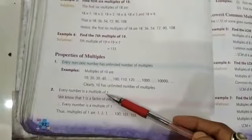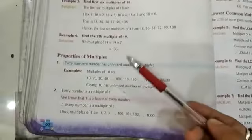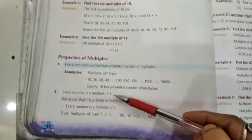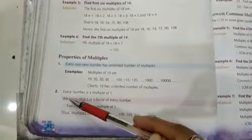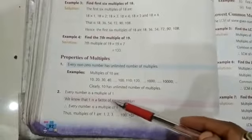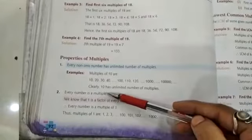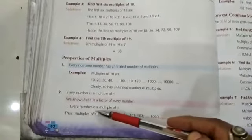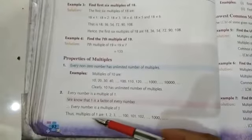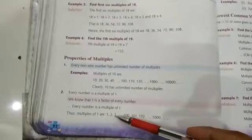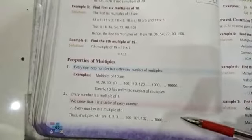Next property is every number is a multiple of 1. We know that 1 is a factor of every number. Every number is a multiple of 1. Thus multiples of 1 are 1, 2, 3, 100, 1000, and so on.